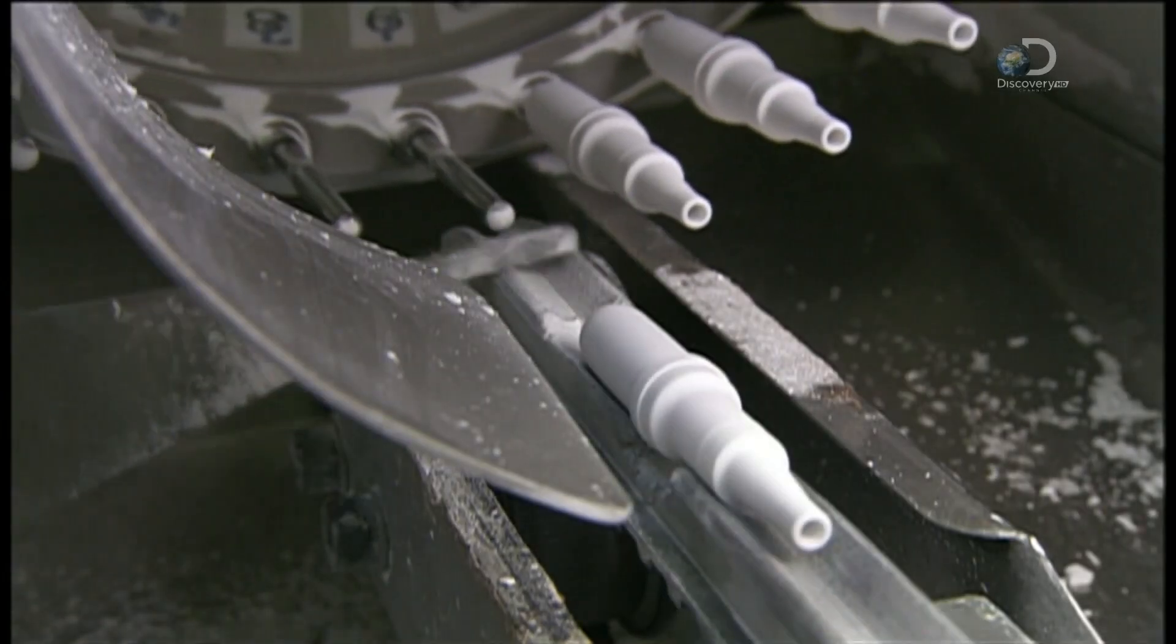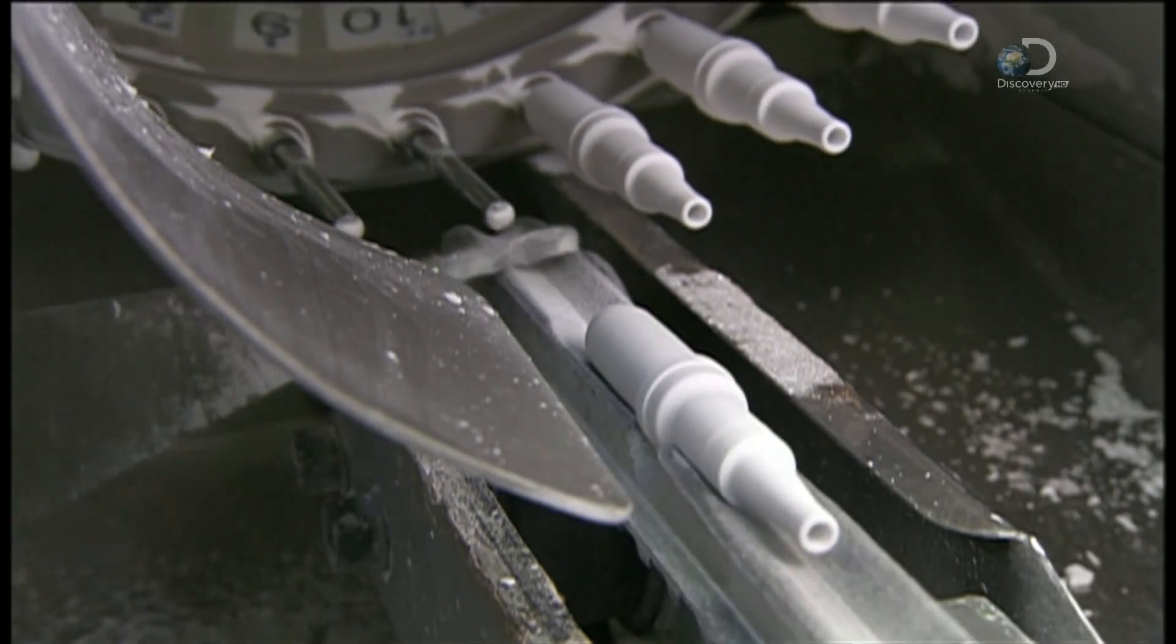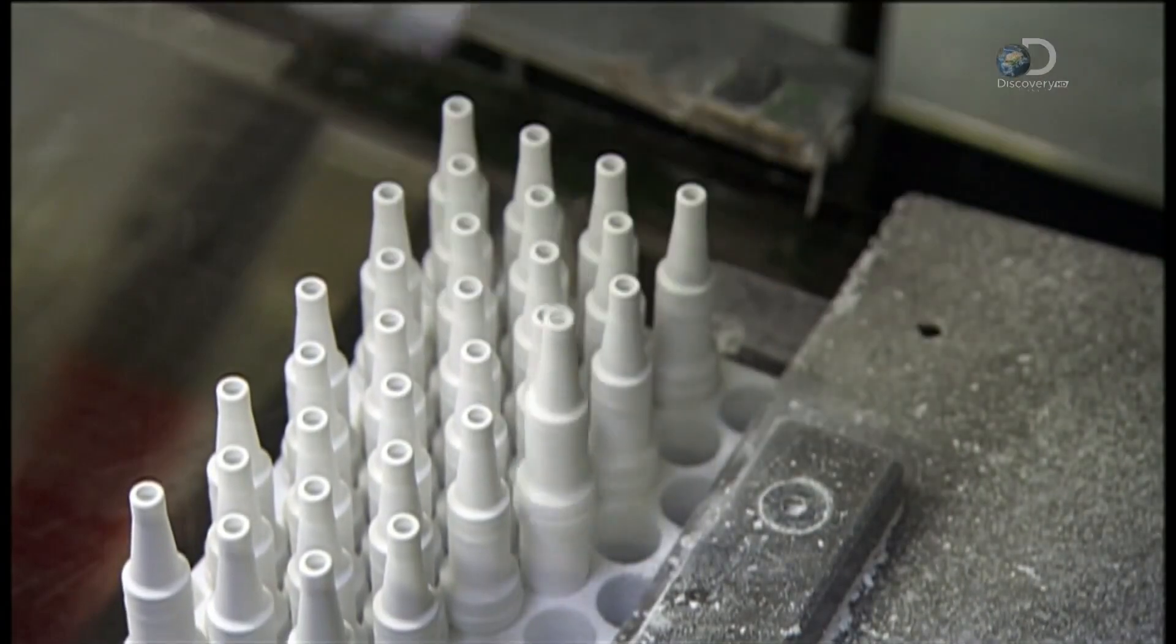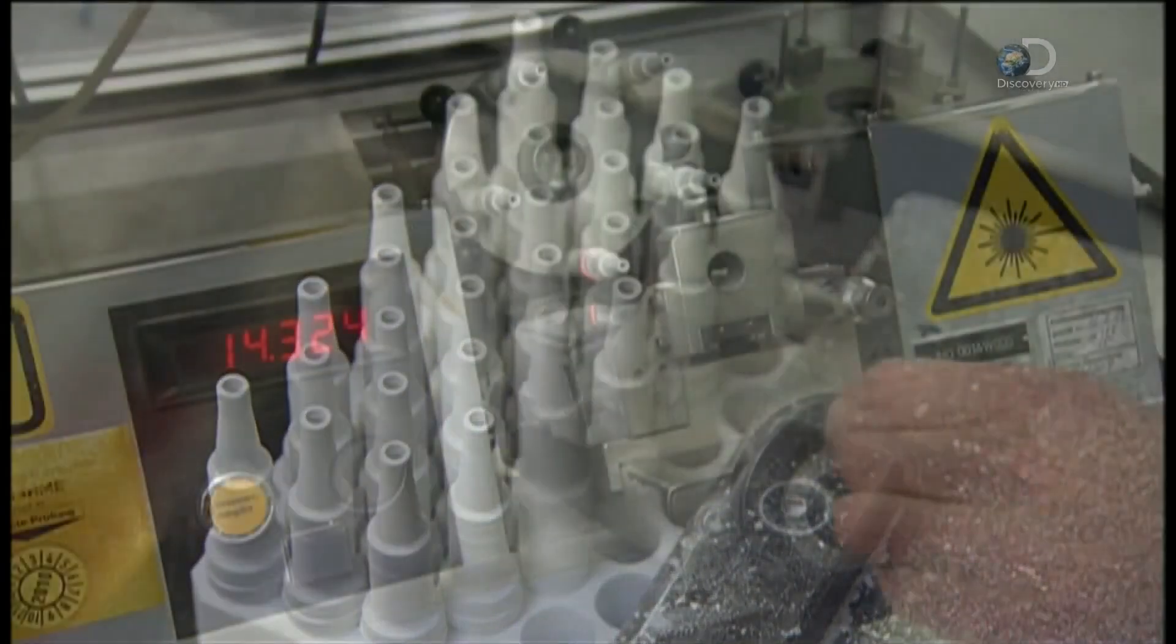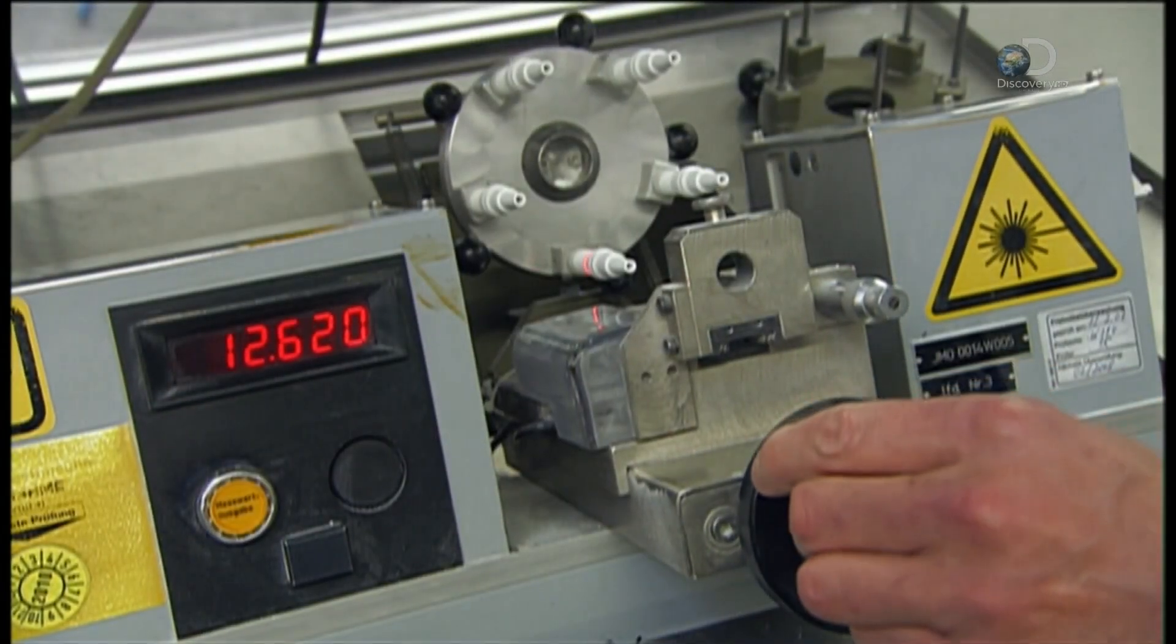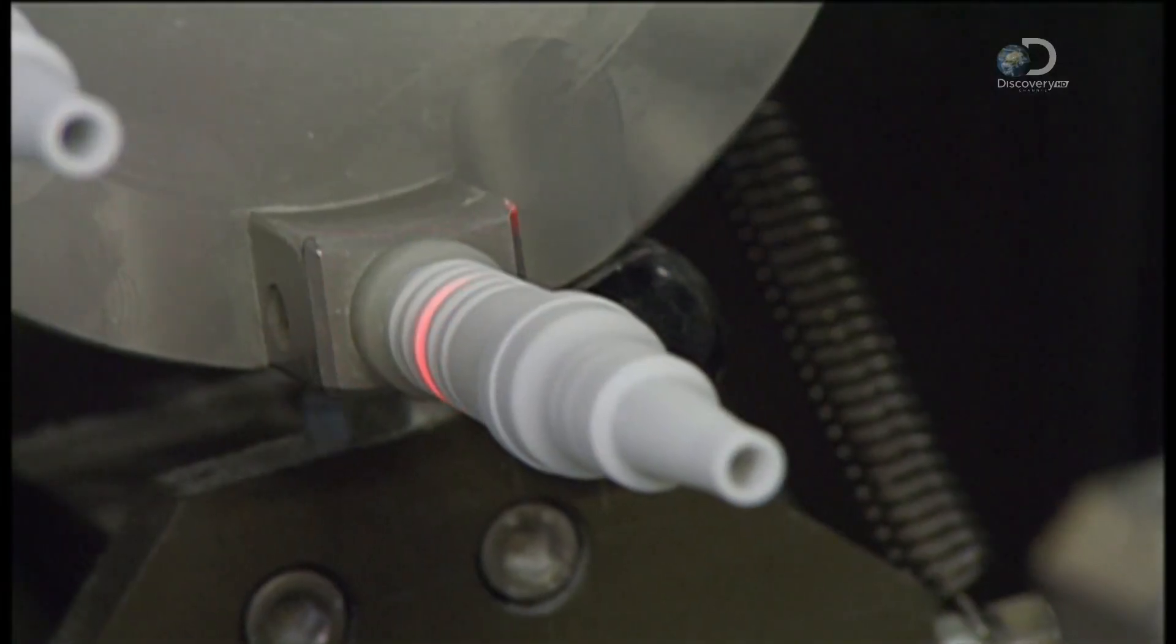These ceramic shapes are quite fragile, and they'll need to be baked in order to harden. But first, a tester double-checks the measurements with a laser tool.